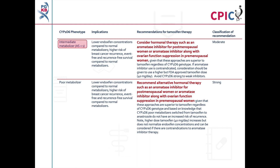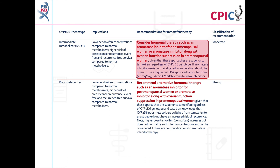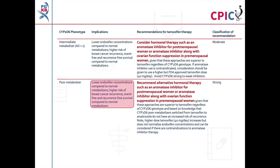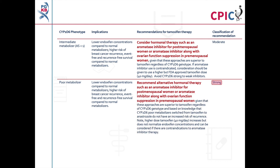Patients with a CYP2D6 intermediate metabolizer phenotype with an activity score of less than 1 will have reduced plasma concentrations of endoxifen and are at a higher risk of breast cancer recurrence. An alternative hormonal therapy can be considered for these patients. If aromatase inhibitor use is contraindicated, a higher dose of tamoxifen can be considered. This is a moderate recommendation. Patients with a CYP2D6 poor metabolizer phenotype will have reduced plasma concentrations of endoxifen and are at a higher risk of breast cancer recurrence. An alternative hormonal therapy is recommended for these patients, and a dose increase can be considered if aromatase inhibitor therapy is contraindicated. This is a strong recommendation.